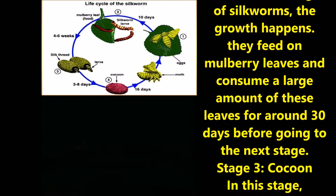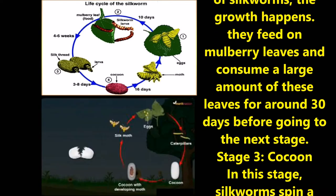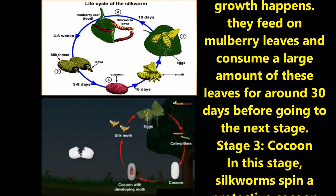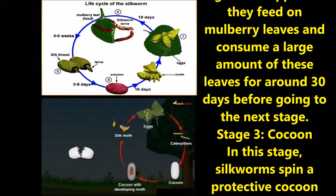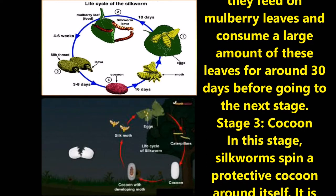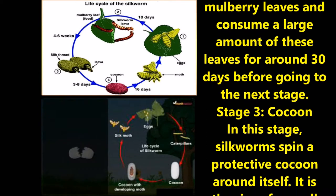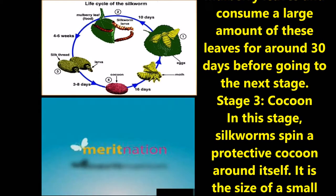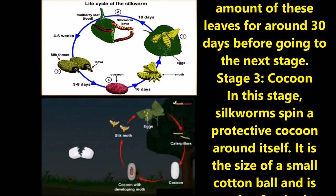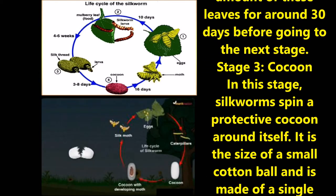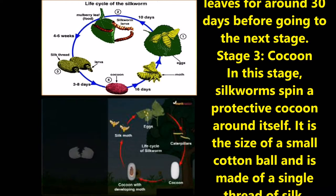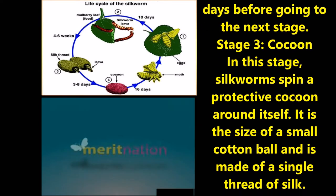Stage three - Cocoon: In this stage the silkworm spins a protective cocoon around itself. It is the size of a small cotton ball and is made up of a single thread of silk.